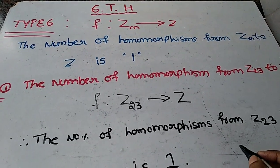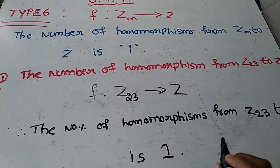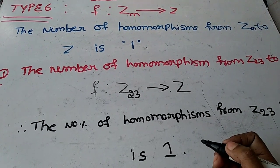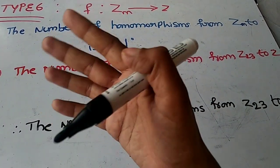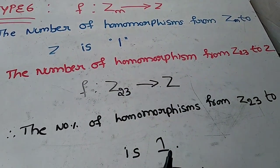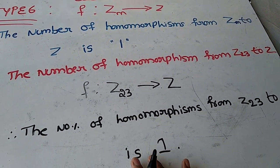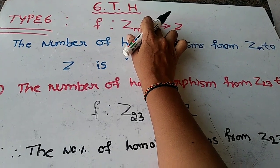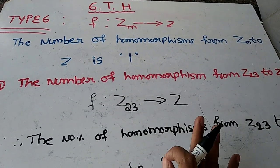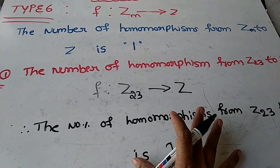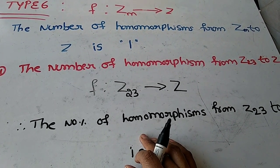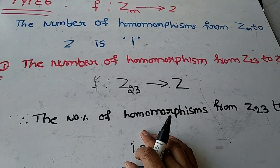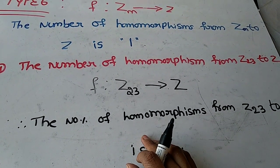So these six types of homomorphisms are all very easy and are often asked in examinations like CSIR NET, KSET, and even PhD entrance exams. Just remember the formulas — they all depend on the GCD concept. If you're perfect in GCD, you'll definitely score. If you liked the video, give a thumbs up, share, and subscribe to my channel. Thank you for watching.